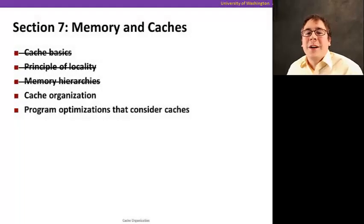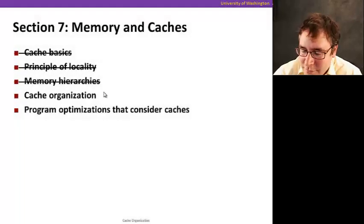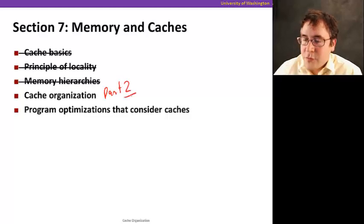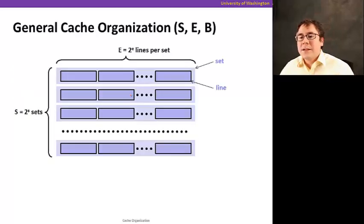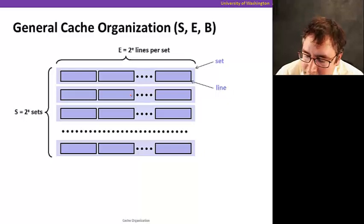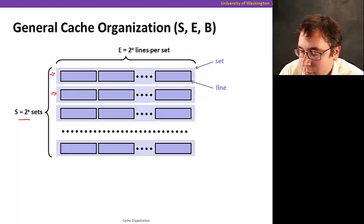Now we're going to see part two of cache organization. Let's start with a general organization. As I said before, the cache has a certain number of sets, that's where data can go, and each set has a certain number of lines or blocks.